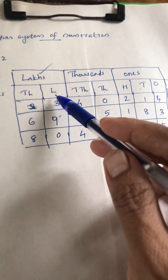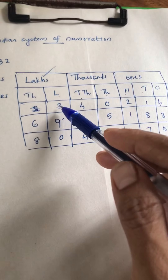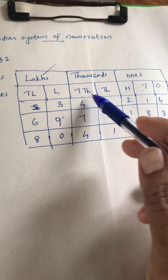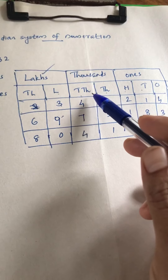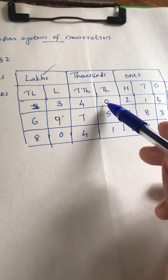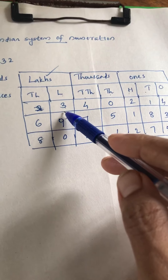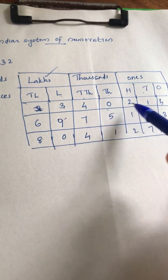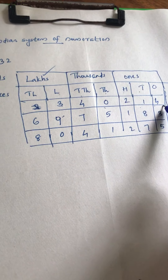When we count, how many lakhs are here? The first number has three lakhs. In the thousands place, we have four and zero — forty thousand. So we read it as: three lakhs, forty thousand, two hundred fourteen.